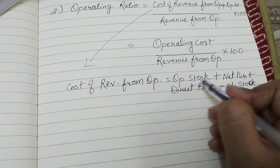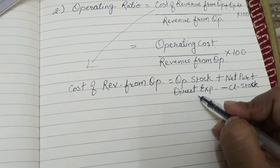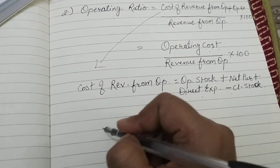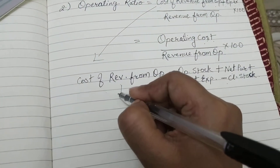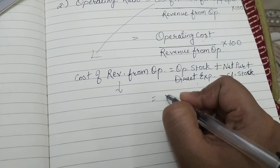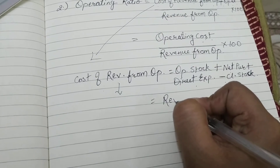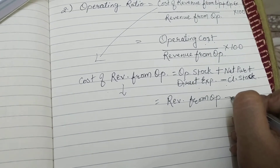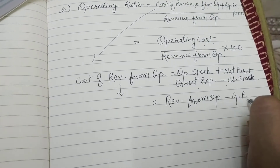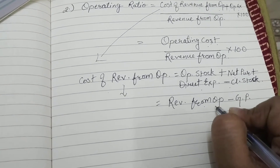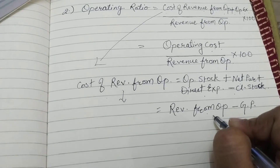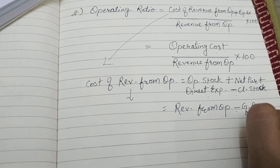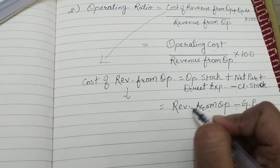To find the cost, you add net purchases to opening stock, then add direct expenses, and subtract closing stock. Alternatively, if we subtract gross profit from revenue from operations, we get the cost — that tells us exactly what the cost was.